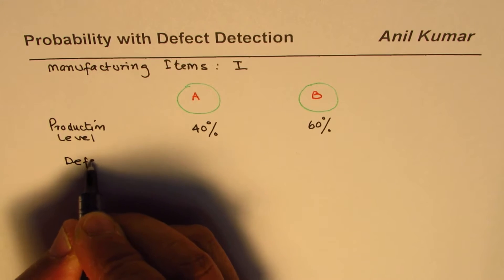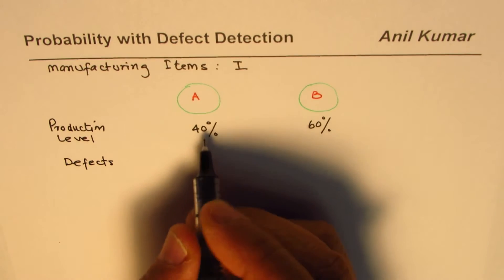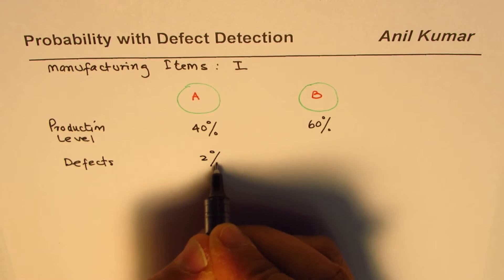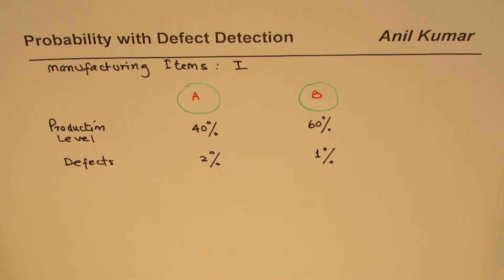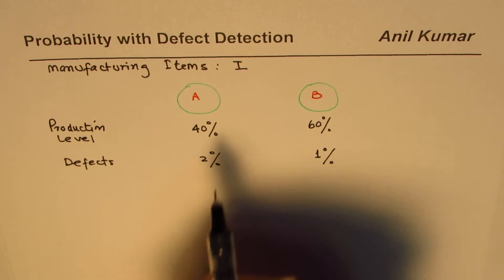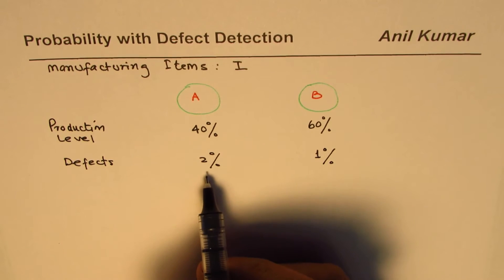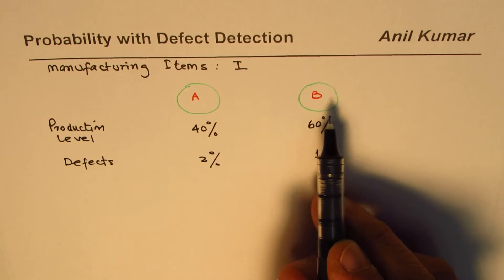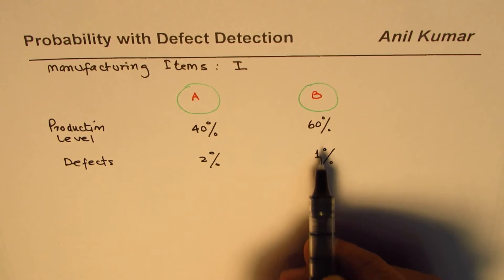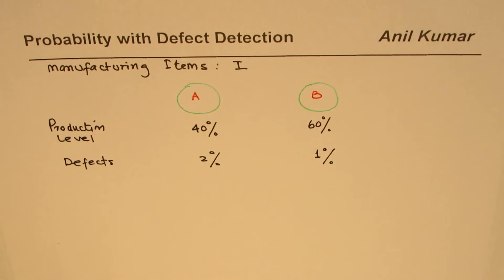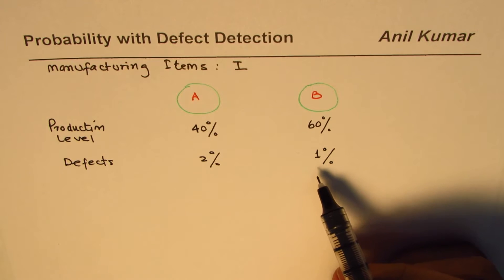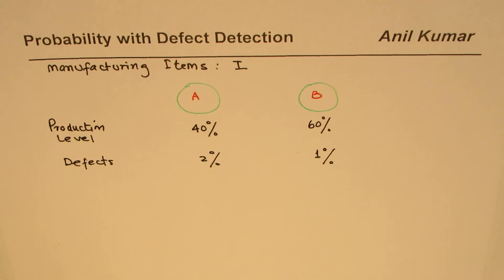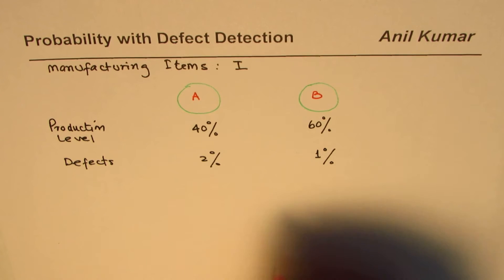Now whenever you manufacture anything there could be defects. The percent of defects from machine A is 2 percent and from machine B is 1 percent. This is a bit surprising — the machine used less is producing more defects. The machine producing more is producing fewer defects. We've taken a scenario where the most efficient machine is being used the most.